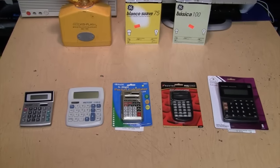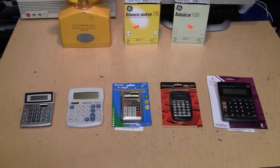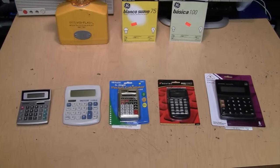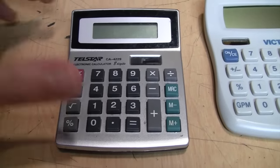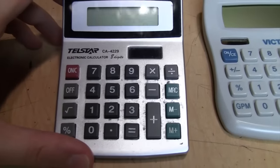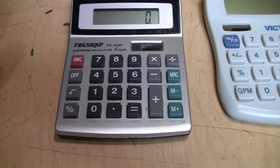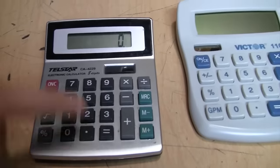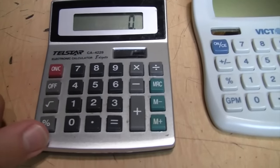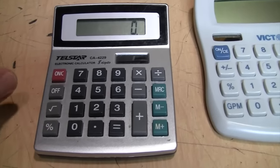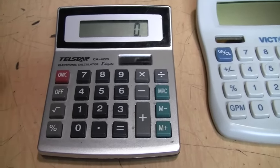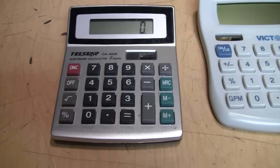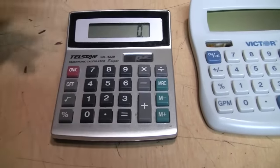Why do I have a bunch of cheap calculators on my table? That's because we're going to do a little investigation. It all started with this one, a Telstar CA4229, a very basic calculator that I've been using for a number of years now, until recently when I accidentally knocked it off the table and it fell on the floor and it stopped working.